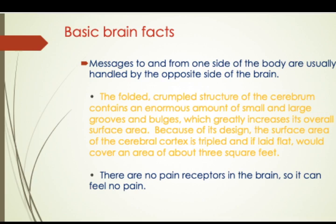There are some basic brain facts that are quite interesting. The messages to and from one side of the body are usually handled by the opposite side of the brain. So if the right side of your body is not functioning, it implies there is some problem with the left side of the brain and vice versa. The folded, crumpled structure of the cerebrum contains large and small grooves that greatly increase its overall surface area — the surface area of the cerebral cortex is tripled, and if laid flat would cover about three square feet.